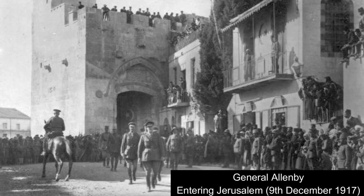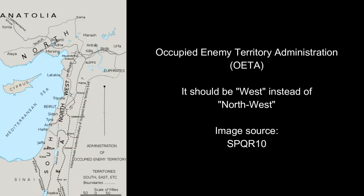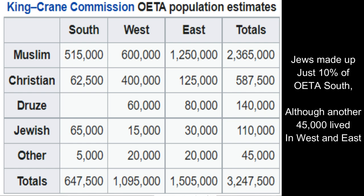Where our story finished off last time was with General Allenby marching through the gates of Jerusalem — the first time in almost 700 years that a non-Muslim had control of the city. The British and French kicked out the Ottoman Turks and set up the Occupied Enemy Territory Administration, the OETA, split into south, east, west, and north sections. We'll mainly focus on OETA South, which comprises most of today's Israel/Palestine, where just 10% of the population were Jews.